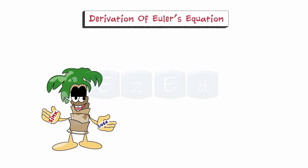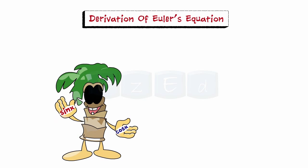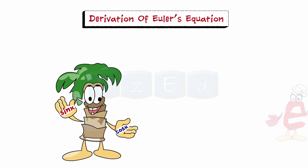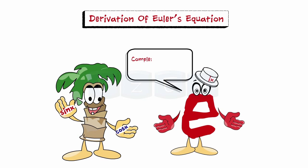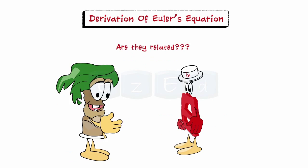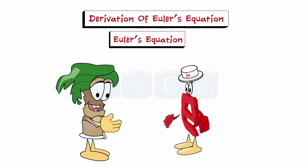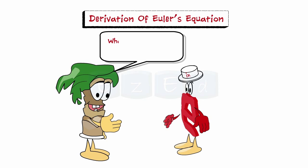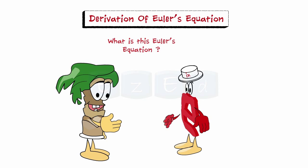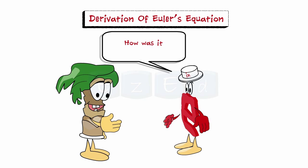Hi, we are the trigonometric functions sine and cosine. Hello, I am the complex exponential function. Are they related? They are related by a fabulous equation called Euler's equation. What is this Euler's equation? How was it discovered?